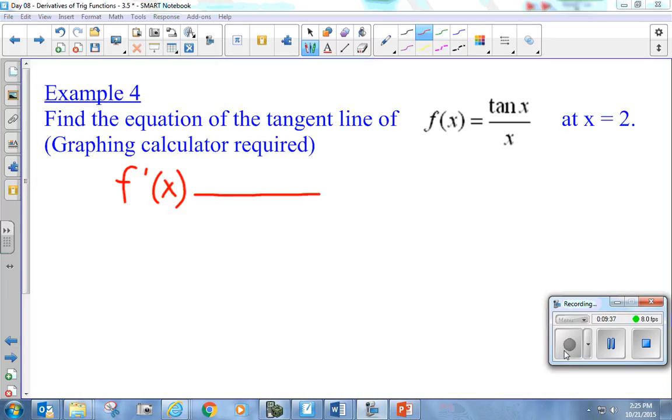So, low, high. So, it's low times the derivative of high. What is the derivative of tan? Secant squared. Low d high minus high, tan of x, d low. What's the derivative of x? Just one.